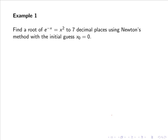So let's find a root of e to the minus x equals x squared to 7 decimal places using Newton's method with the initial guess x0 equals 0. So firstly we need to come up with our function f of x and in this case we can say that f of x equals x squared minus e to the minus x.